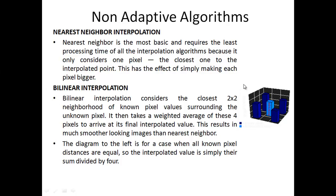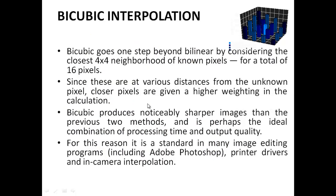Bilinear interpolation takes the closest 2×2 neighborhood of known pixels — four pixels — and computes a weighted average to arrive at the final interpolated value. Bicubic takes a step further, using the 4×4 neighborhood — 16 pixels — with various assigned weights to compute the final intermediate pixel value.